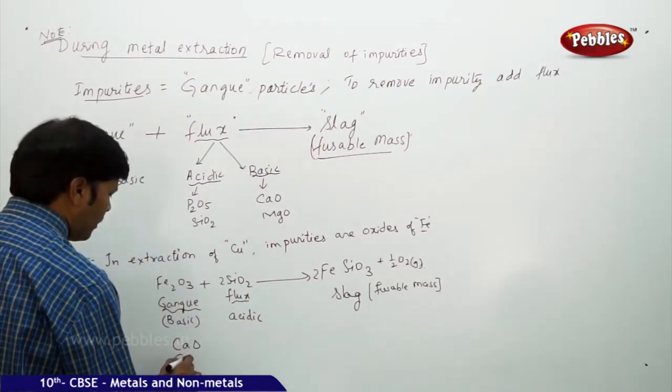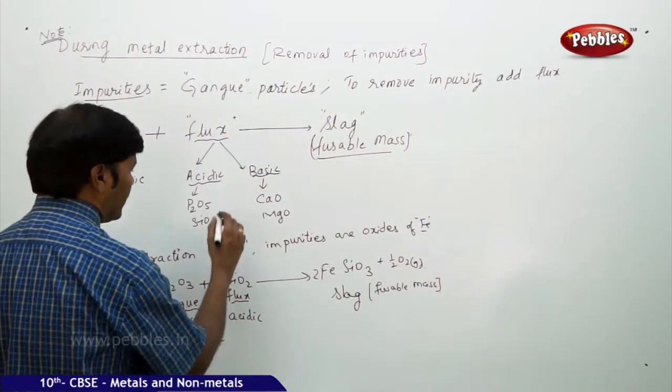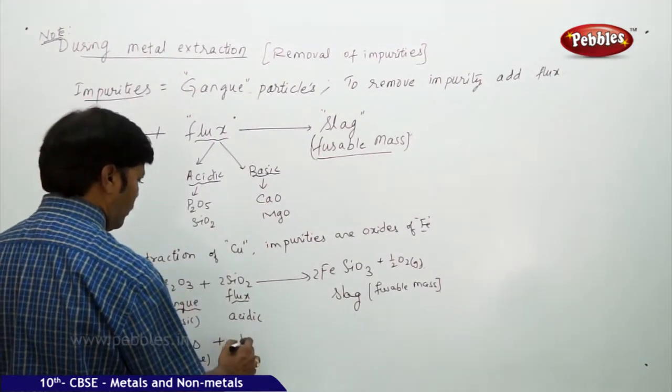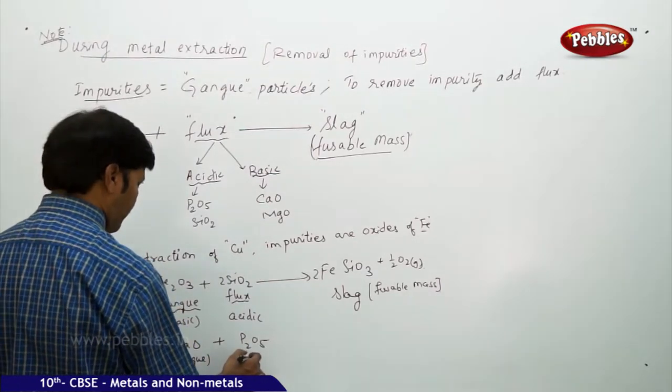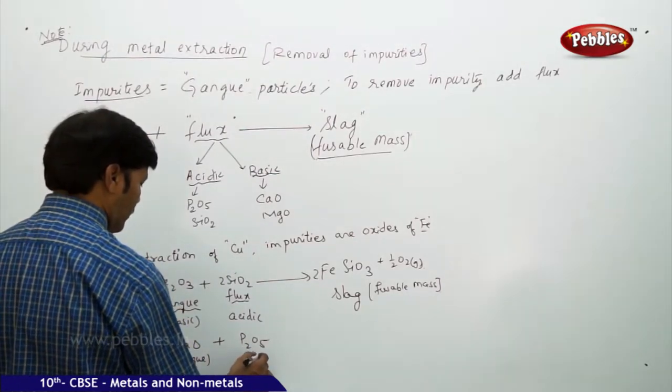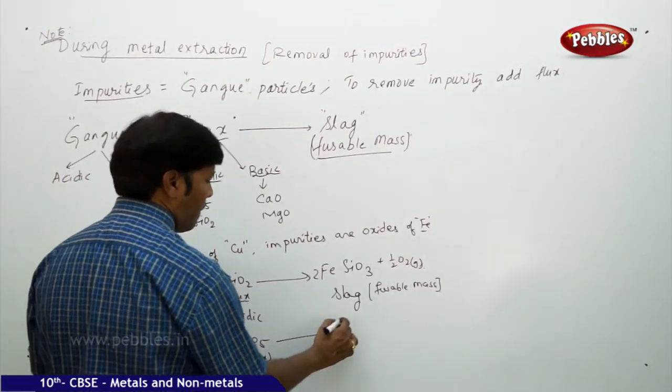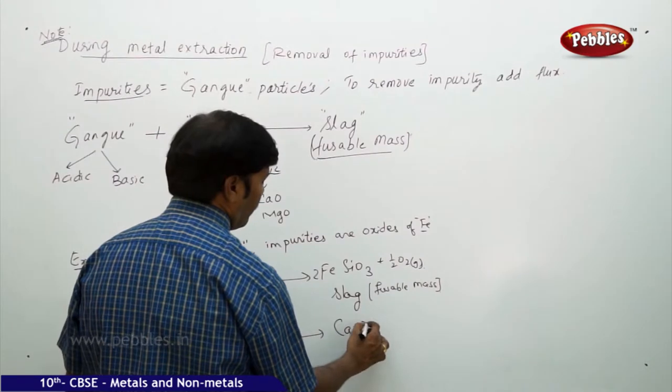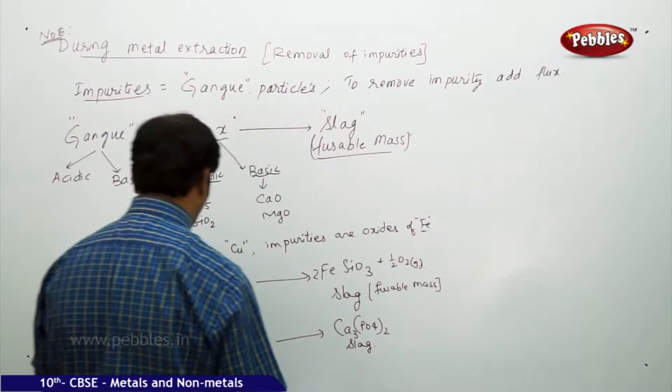Calcium oxide is gang particle, basic. Then flux is acidic, you can take P2O5 is acidic. Flux is acidic, you got here, calcium phosphate as a slag, fusible mass slag.